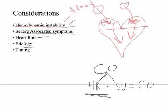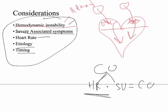Once you've maintained rate control, you look at the etiology — what's causing the AFib — and do some lab workups. The last thing to think about is timing: how long has this been going on and what does that mean for treatment? So the five things to remember are: hemodynamic instability, severe associated symptoms, heart rate, etiology, and timing.